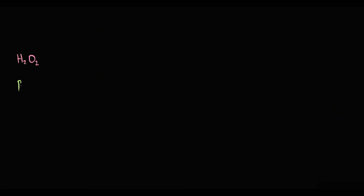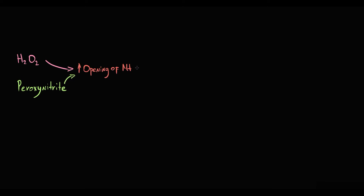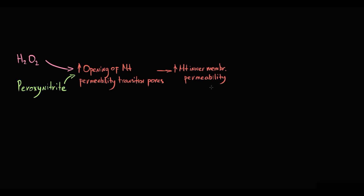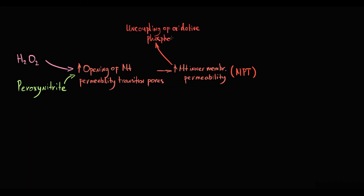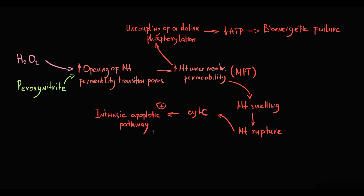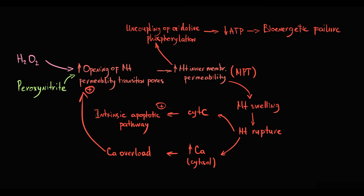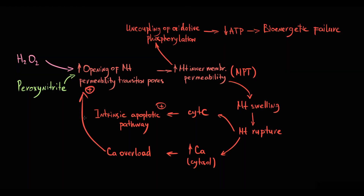Both hydrogen peroxide and peroxynitrite are also able to induce mitochondrial permeability transition. They induce opening of mitochondrial permeability transition pores, which markedly increases permeability of the inner mitochondrial membrane — normally impermeable. Once mitochondrial permeability transition occurs, it is a point of no return: it causes uncoupling of oxidative phosphorylation, decreasing ATP production and leading to bioenergetic failure. It also causes mitochondrial swelling leading to mitochondrial rupture, releasing cytochrome C into the cytosol which induces the intrinsic apoptotic pathway. Furthermore, calcium stored in the mitochondrial matrix is released into the cytosol, causing calcium overload that induces mitochondrial permeability transition in other mitochondria — creating a positive feedback loop that leads to cell death.